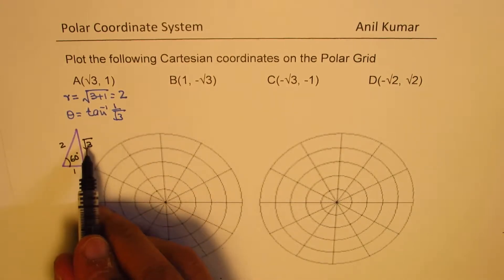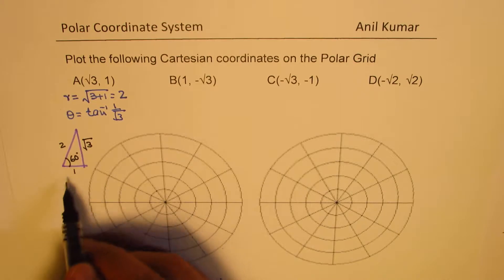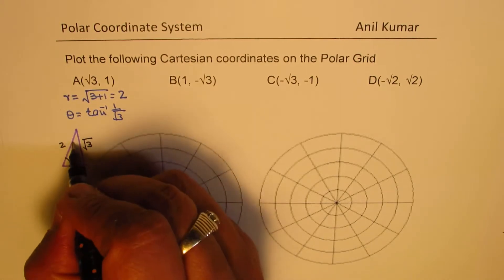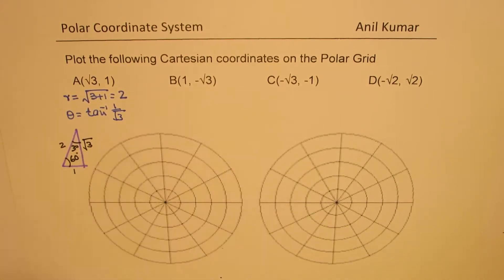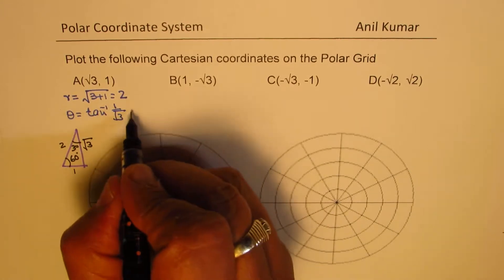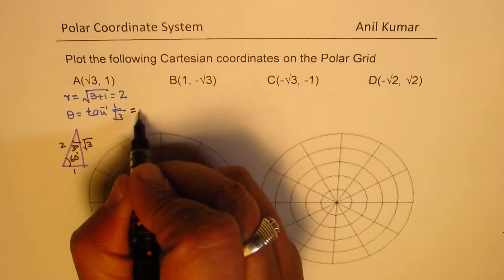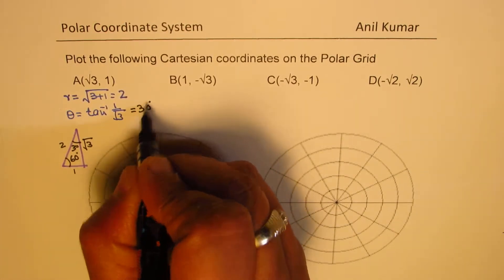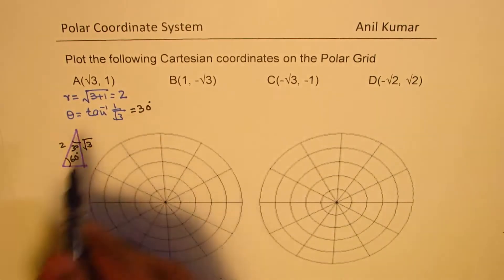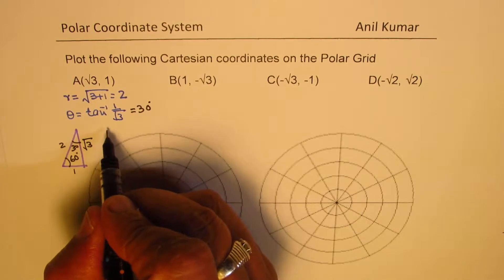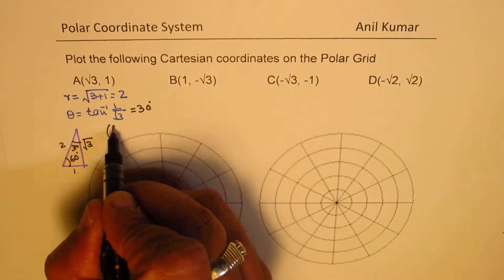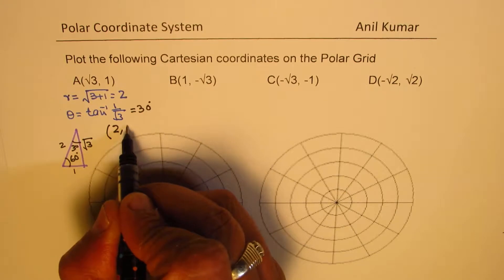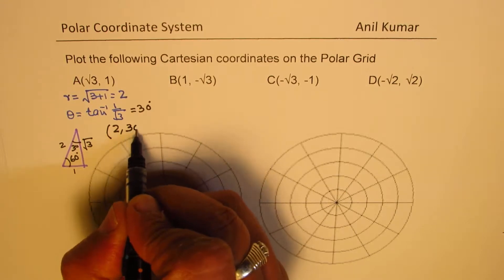For 60 degrees, we have tan of √3 over 1, but for 30 degrees, we have 1 over √3. So what we get here is that theta equals 30 degrees. So we get a polar coordinate equivalent to r = 2 and theta = 30 degrees.